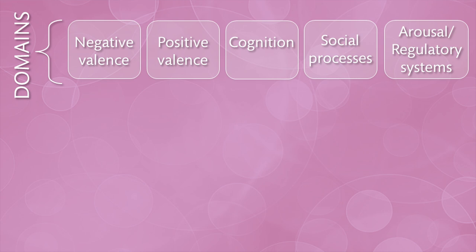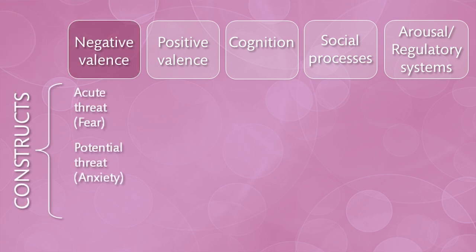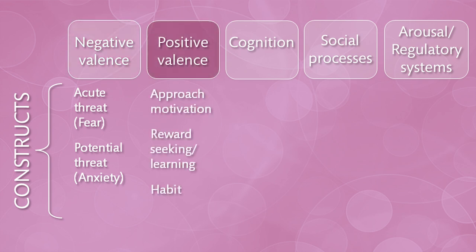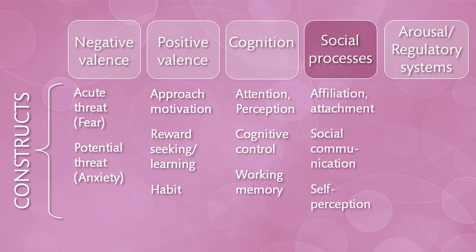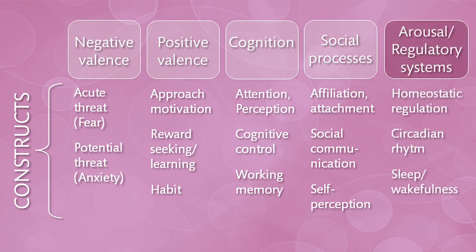RDoC was created to be a dynamic system that should be continuously updated. At present it encompasses five higher-order candidate domains. Negative Valence reflects responses to aversive situations such as acute threat or fear, anxiety, or loss. Positive Valence reflects motivation-based behaviors such as responsiveness to reward or habit learning. The third domain, Cognition, reflects systems such as attention, perception, and working memory. Social Processes refers to interpersonal aspects such as affiliation, attachment, and social communication — for example, the ability to perceive someone's emotional state through facial expressions. The fifth domain, Arousal and Regulatory Systems, is responsible for maintaining homeostatic regulation through energy balance and sleep.